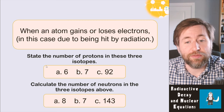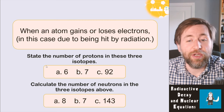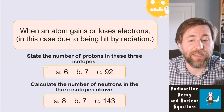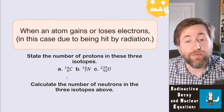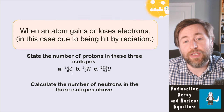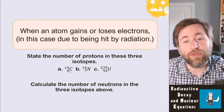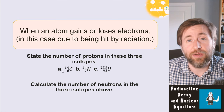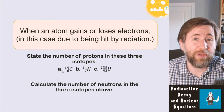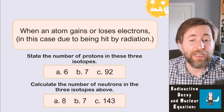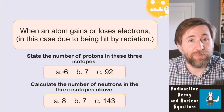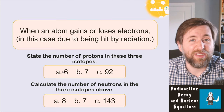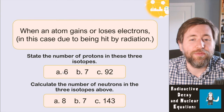Calculate the number of neutrons in the three isotopes: that was eight, seven, and 143. The way you calculate the number of neutrons is to take away the proton number, the smaller number, from the larger number. The larger number is protons plus neutrons, so you just need to subtract to find the number of neutrons.